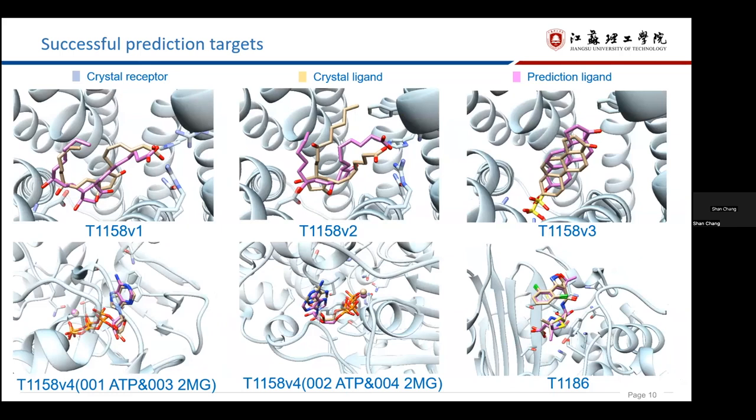This is also the successful targets predicted by our group. T1158 has four different ligand binding models, and we are all predicted correctly. You can see these five pictures.